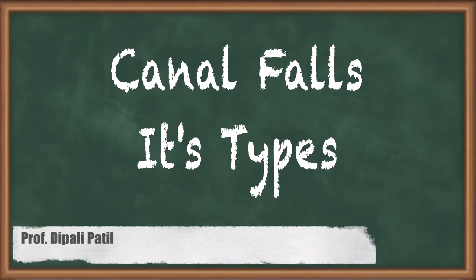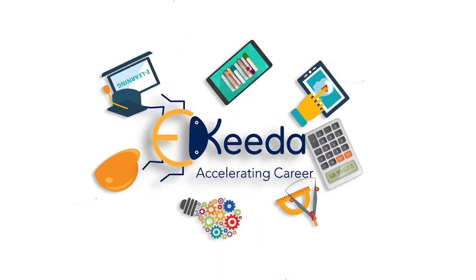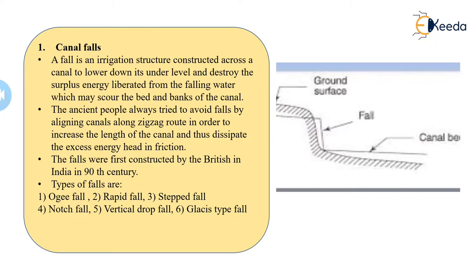In this video we are going to study about the canal falls. In the previous module or chapter we had studied the various distribution systems and canal headworks. During the construction of the canal we had studied the various cross-sections, the losses, and how we can decide the cross-section areas of the canal, how we can find out the discharge, and how we can do the maintenance of the canal.